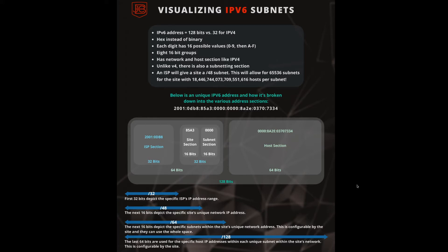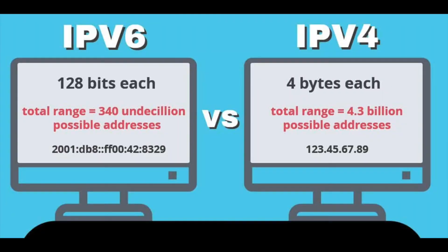I have no idea how much undecillion is — I don't even know if I'm saying it correctly. It is such a big number it doesn't even matter. It's just massive. Really, you're looking at the difference between 2 to the power of 32 versus 2 to the power of 128. You can run that through your calculator if you want — it'll probably start smoking. I'll put up an image here to show you the difference in sizes.